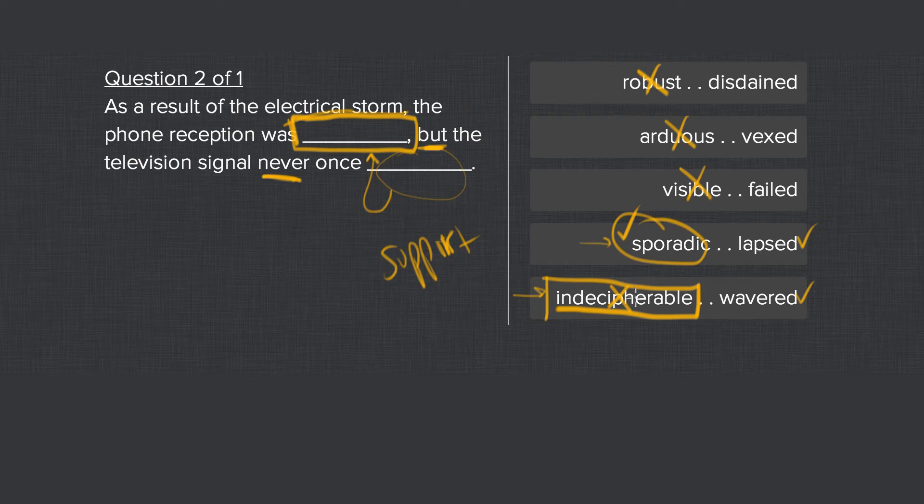You could say the phone call was indecipherable but you wouldn't say the reception was indecipherable. You could say the reception was bad, weak, or spotty. But you can never decipher reception. That's never something that's decipherable in general. So you wouldn't say it's indecipherable. You might say the person's voice on the line was indecipherable but that's not what we're talking about here.